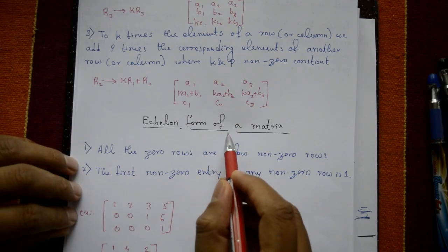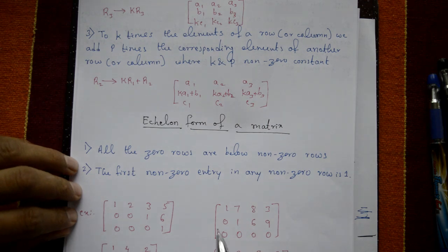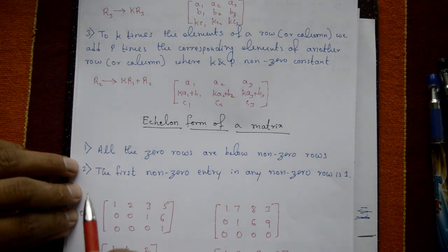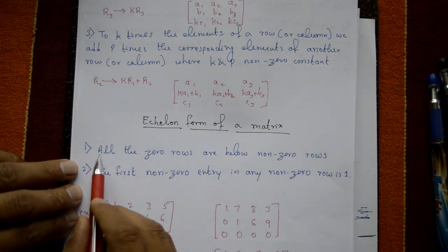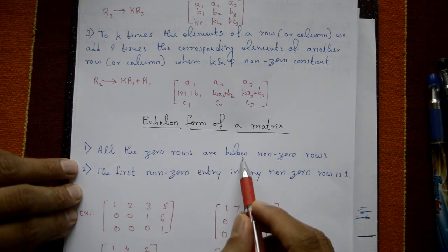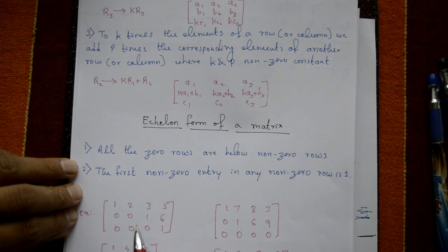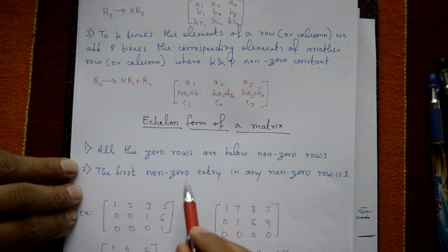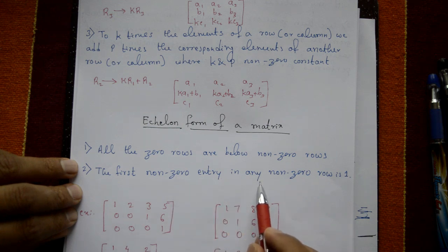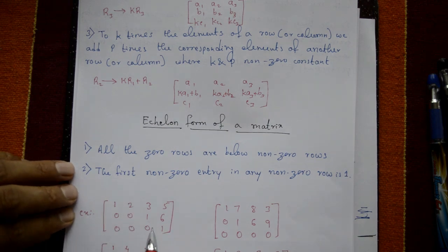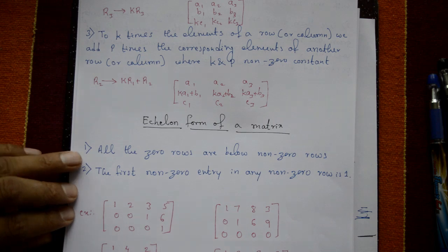This is the echelon form of a matrix. Two conditions: the first condition is that all zero rows are below non-zero rows. The second condition is that the first non-zero entry in any non-zero row must be one.